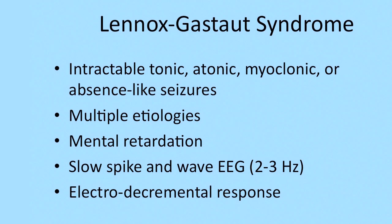So what is Lennox-Gastaut syndrome? In its traditional form, it is a triad of seizures, including tonic seizures, atonic seizures, and myoclonic or absence-like seizures — these would be atypical absence seizures. There is some confusion between the word typical and atypical, and really the difference between the two is an EEG-related difference.